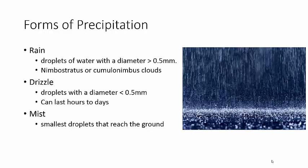We made it to forms of precipitation. The one we're most familiar with is rain. Officially, rain is water with a diameter of half a millimeter or more. Rain droplets average two millimeters in size, but they only have to be half a millimeter or bigger. These usually fall from cumulonimbus clouds or nimbostratus clouds.